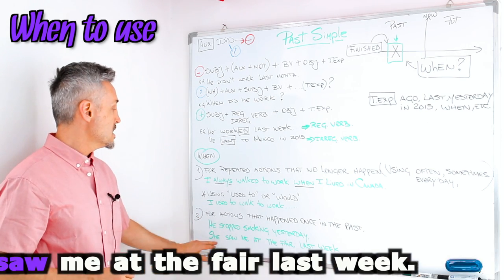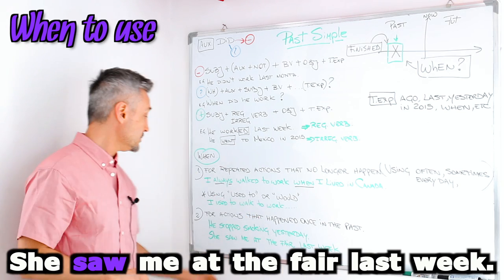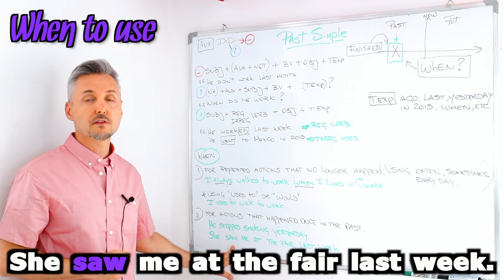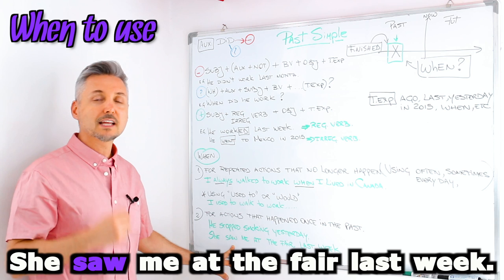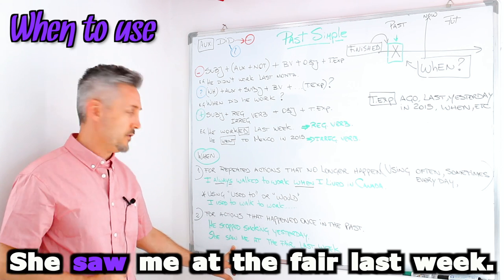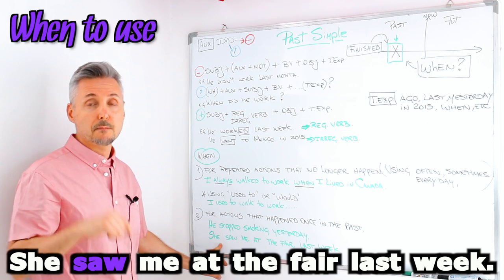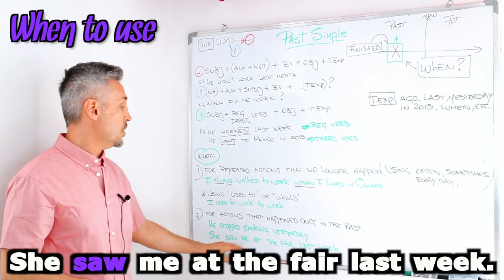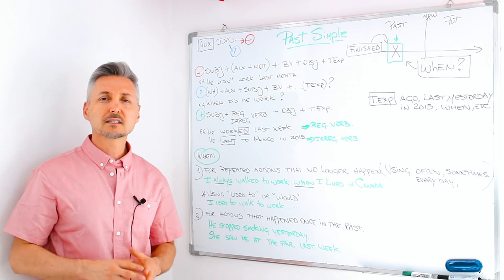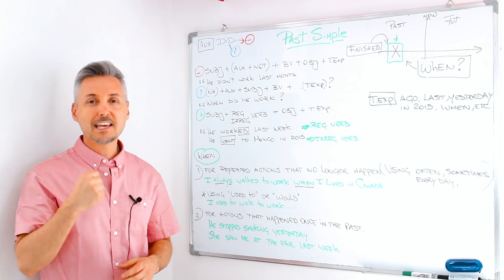Another example. You can check the list of irregular verbs on your grammar book or on your dictionary. So I know that to see is irregular. So the past of to see is saw. She saw me at the fair last week.